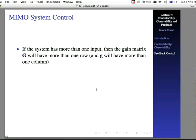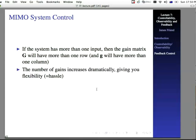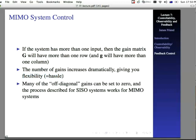If the system has more than one input, then the gain matrix G will have more than one row. And lowercase g will have more than one column. So you have to watch out for these things. The number of gains increases dramatically. So, for example, if you have two inputs instead of one, you just double the number of gains that you have to worry about. And it gives you lots of flexibility in the design of the system. But, in other words, really what it gives you is hassle. Many of the off-diagonal gains can be set to zero, as it turns out. And the process described for single input, single output systems works the same way as it does for multiple input, multiple output systems. The problem is, is that this hassle and flexibility can actually get you in trouble with systems that are complicated. So you have to be a bit careful.